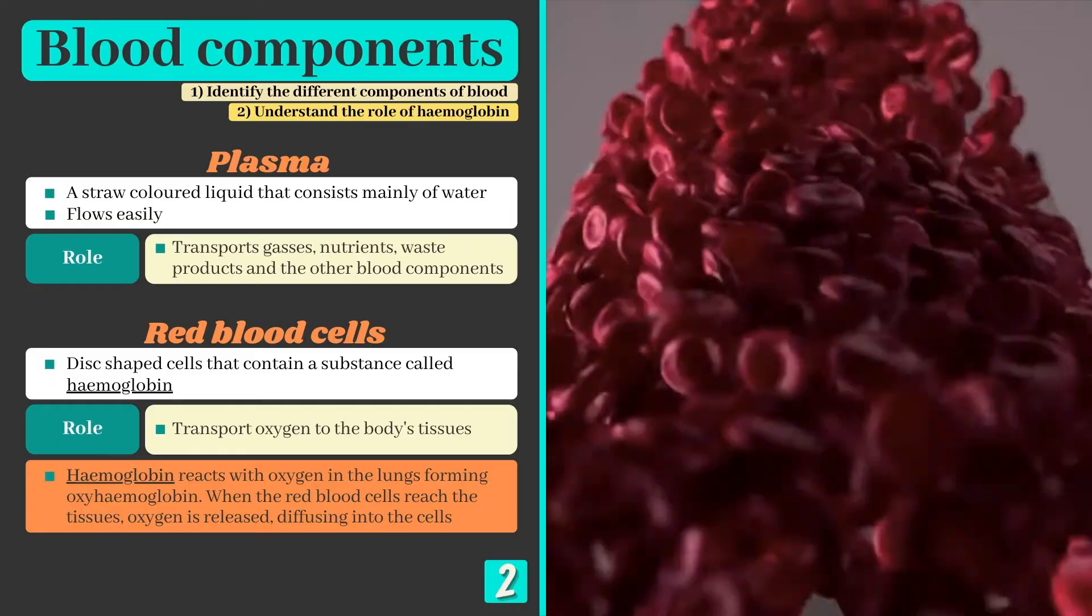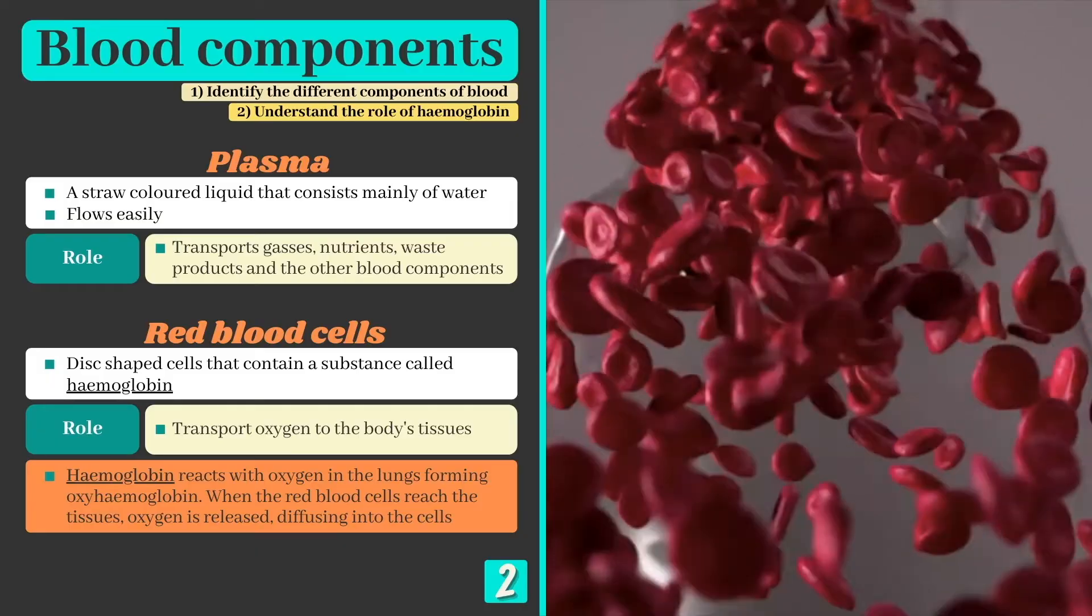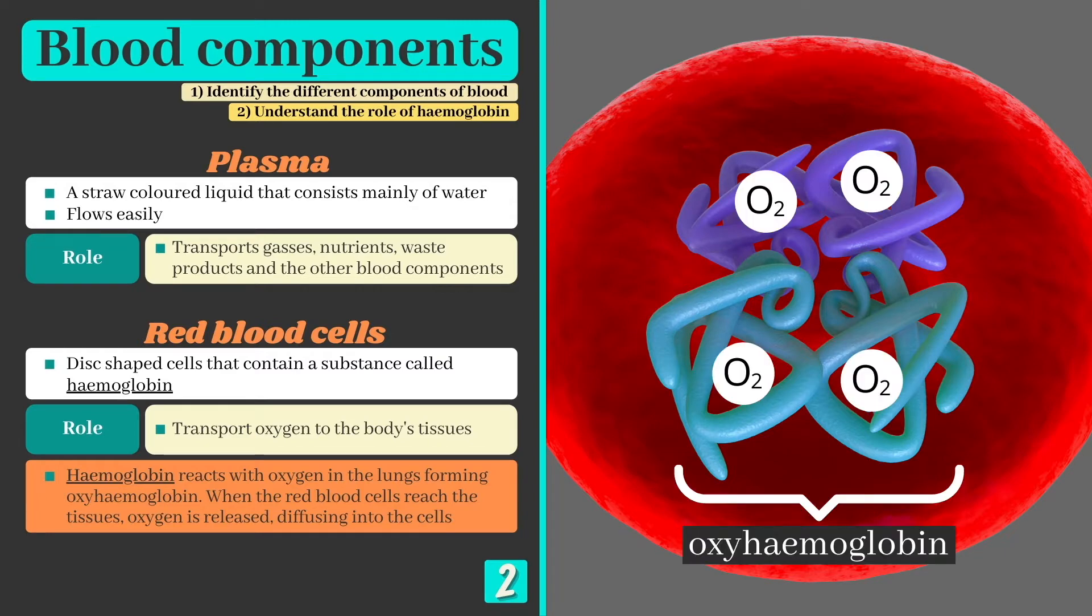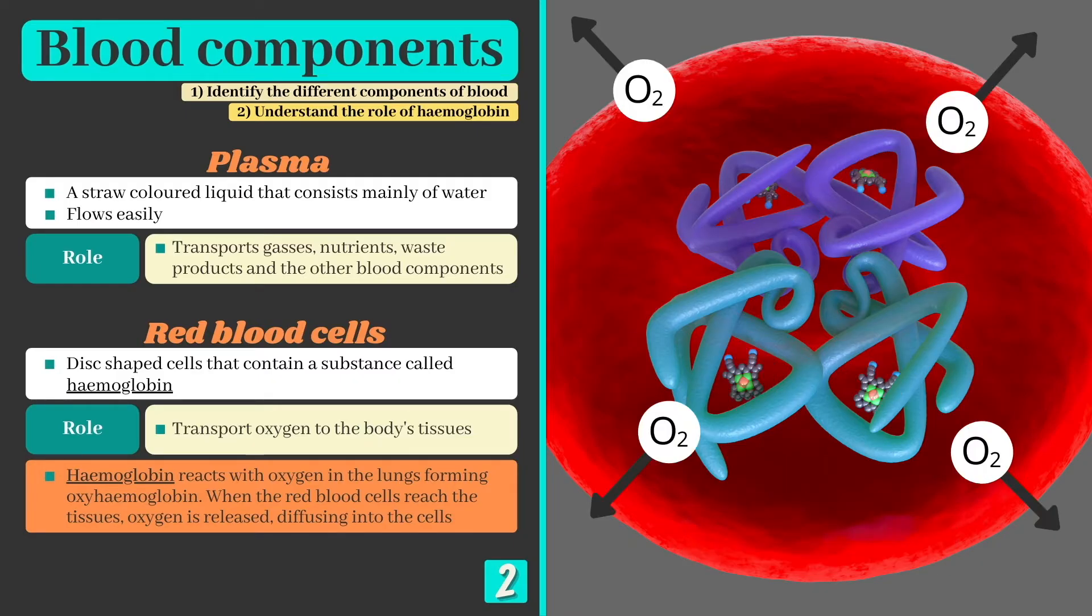The red blood cells are primarily there to transport oxygen. They contain a substance called haemoglobin that reacts with oxygen from the lungs, forming oxyhaemoglobin. When they reach their final destination, the working muscles for example, the oxygen splits from the haemoglobin and diffuses into the cells.